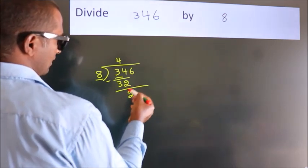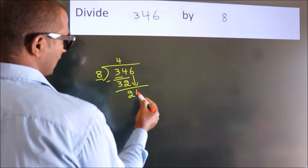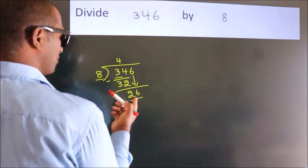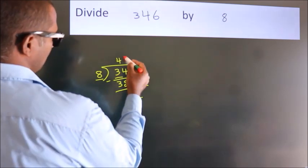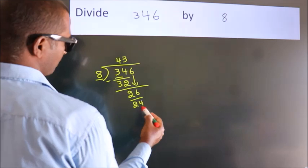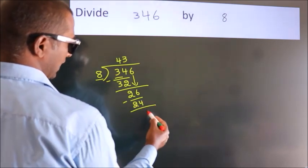After this, bring down the beside number. So 6 down. So 26. A number close to 26 in 8 table is 8 threes 24. Now we subtract. We get 2.